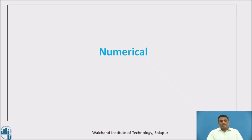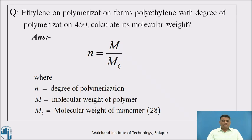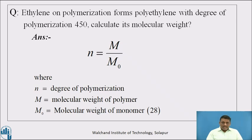Here is the first numerical. Ethylene, a monomer, on polymerization forms polyethylene with a degree of polymerization of 450. Calculate its molecular weight. The degree of polymerization is 450, meaning the average number of monomers repeatedly present in this polymer is 450.